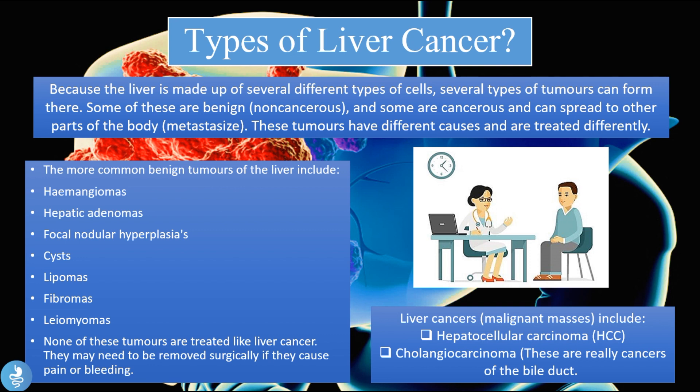Some of the more dangerous, malignant masses of the liver include the hepatocellular carcinoma and the cholangiocarcinoma. The hepatocellular carcinoma is a tumor which begins within the liver itself, and the cholangiocarcinoma is actually connected to the bile duct system within the liver.